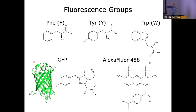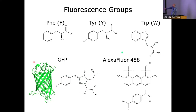Fluorescence groups occur obviously in proteins through the aromatic groups. In a protein you could have a conjugation of amino acids like in GFP, where you get a ring system, and depending on what amino acids have been formed during this you'll get different properties. And then of course there are chemical compounds which you can label as extrinsic fluorophores.